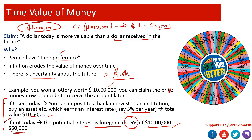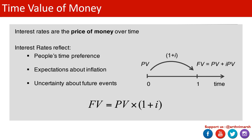Interest rates reflect these three factors. The interest rates we witness in markets — for example the five percent savings rate in the lottery case — reflect our time preference, that is our preference for consuming today or claiming the prize today. They also account for expectations about inflation and the element of risk or uncertainty about future events.